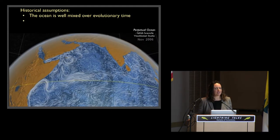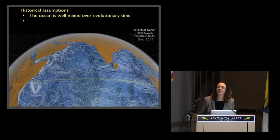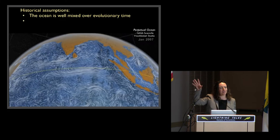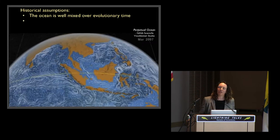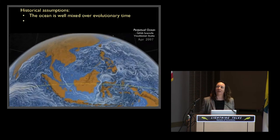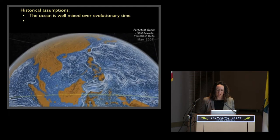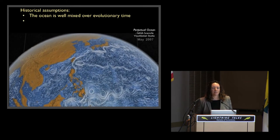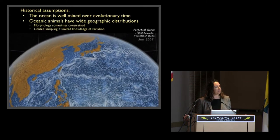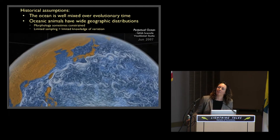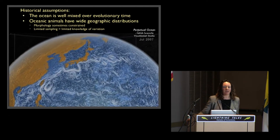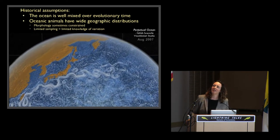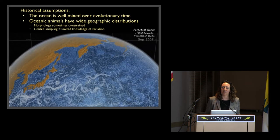For a long time we've been studying the oceans. We've been dragging trawl nets through them and looking at these incredibly dynamic, huge habitats. Generally we assumed that the ocean was well mixed over evolutionary time, and so as we studied the animals with that assumption in mind, we assumed that most of the oceanic animals have very broad geographic ranges. That is supported by the fact that many groups have very constrained morphology in this habitat, but primarily it's driven by limited sampling.